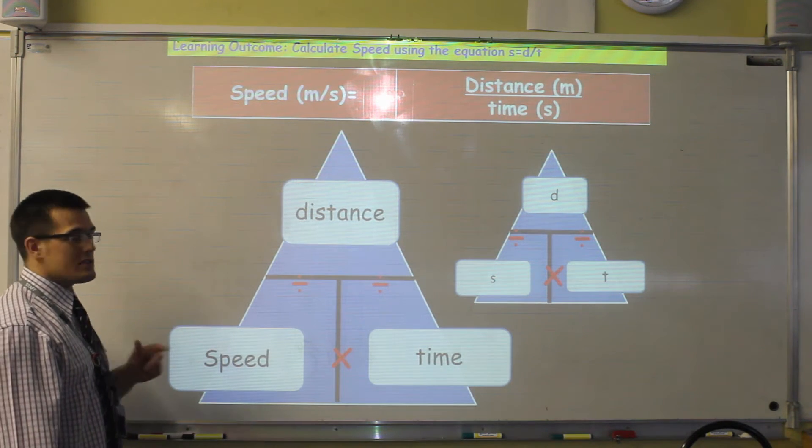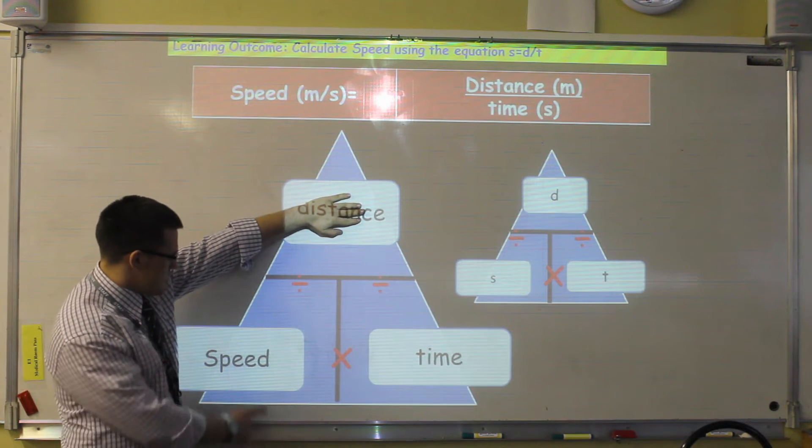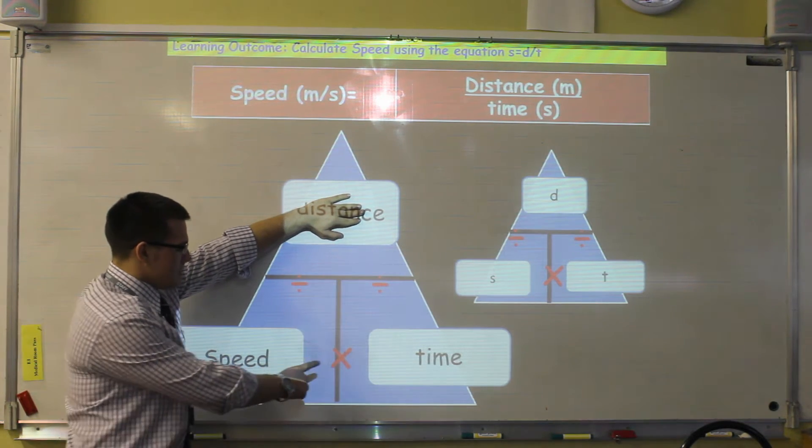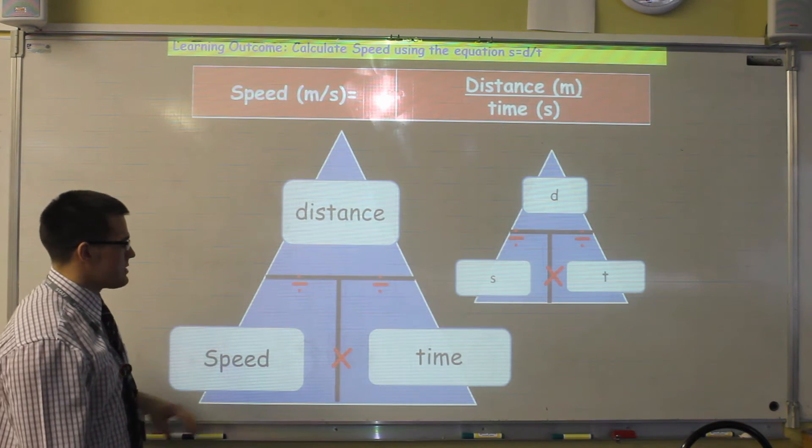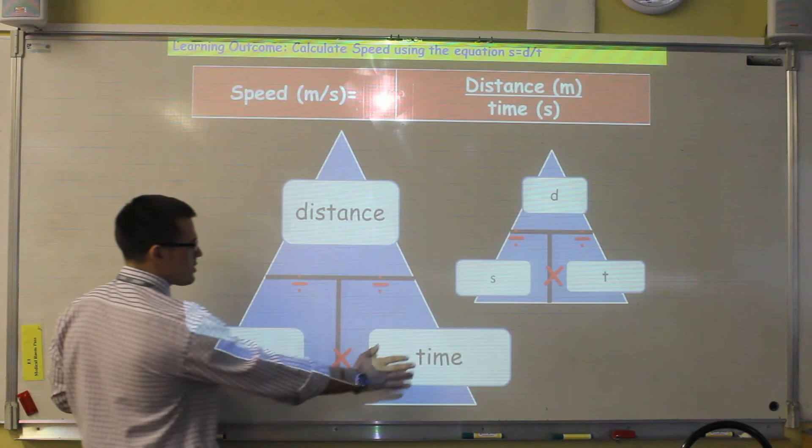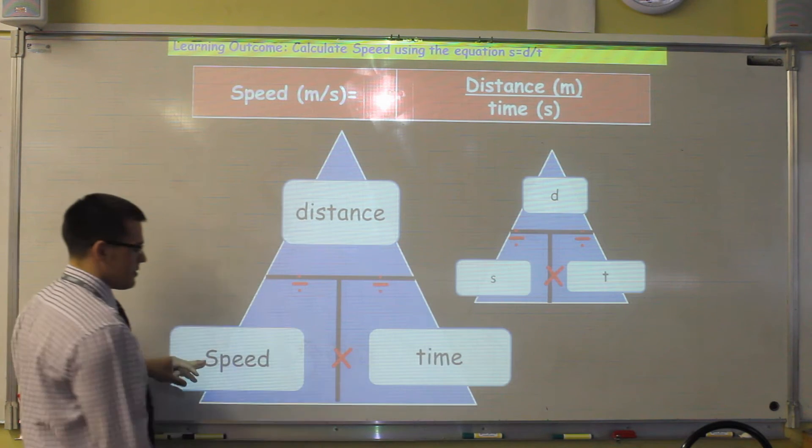If I want to work out the distance of an object, and I know its speed and time, I cover distance, the triangle tells me it's speed multiplied by time. If I want to work out the time of an object, and I know its speed and distance, I cover time, and then my triangle shows me distance divided by speed.